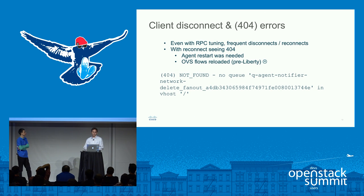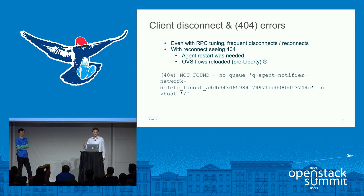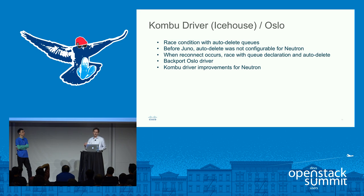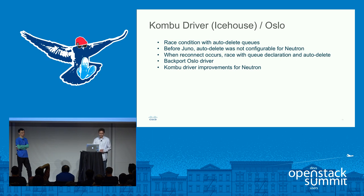Even with the RPC tuning, we were seeing frequent disconnects and reconnects with Rabbit. You would see 404 errors for queue not found. Unfortunately, when stuck in that state, we would have to go and restart the agents. Running OVS pre-Liberty, when you restart OVS, you essentially have to reload all the flows. We quickly determined we were running into a race condition with auto-delete queues. Before Juno, auto-delete was not really an option we could set in Neutron, so all queues were automatically defined with auto-delete. If a Rabbit node went down and clients reconnected, there would be a race condition where RabbitMQ would decide it saw no consumers and delete the queue. We backported some Oslo drivers that really helped stabilize that.